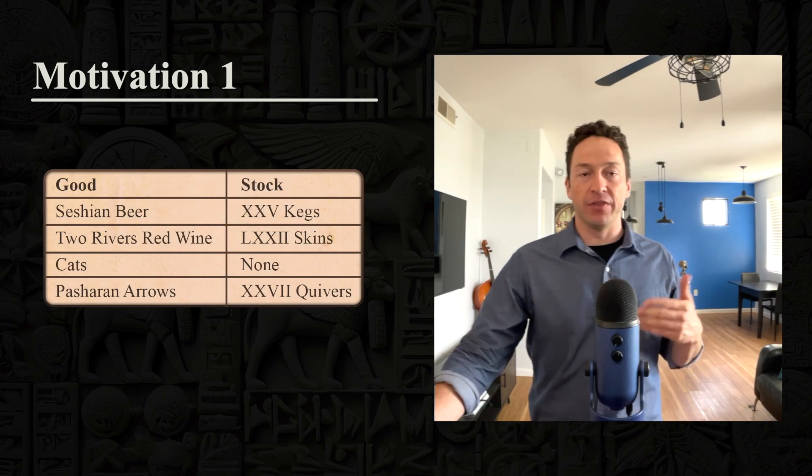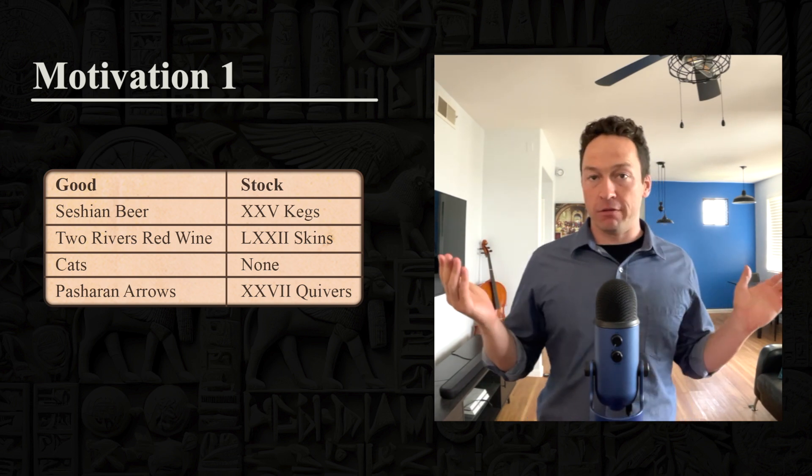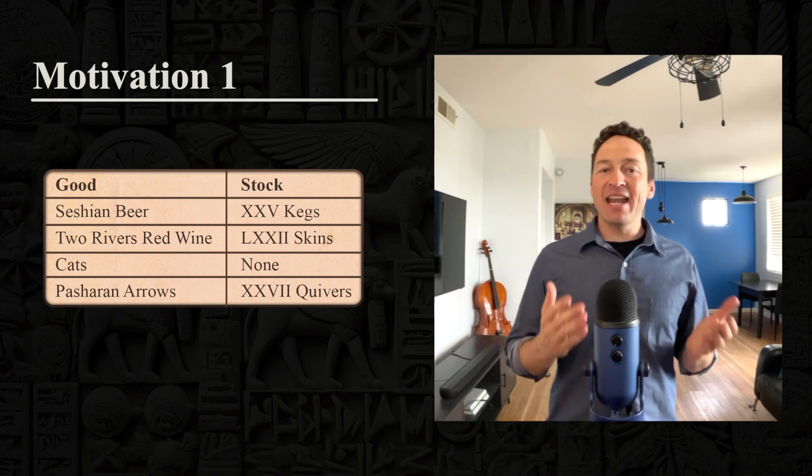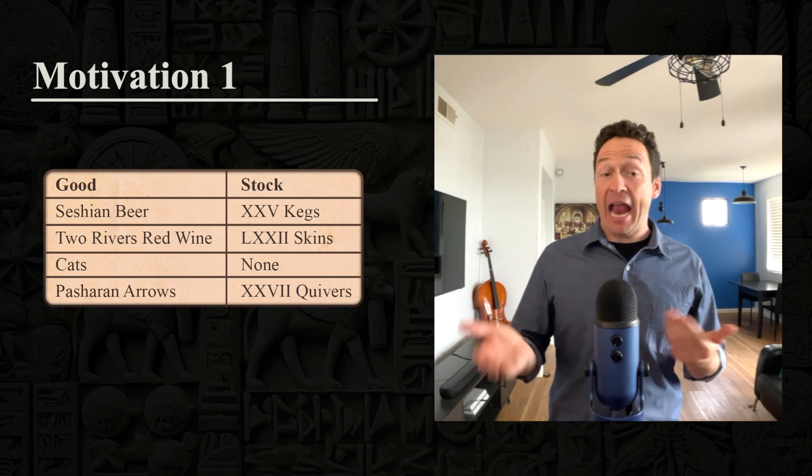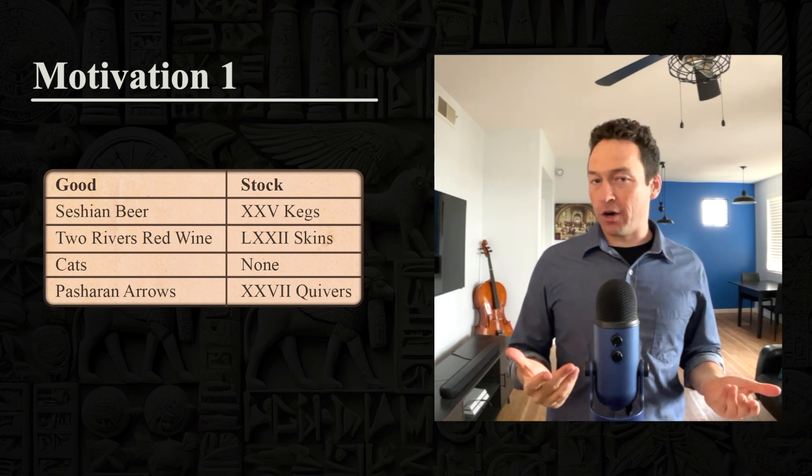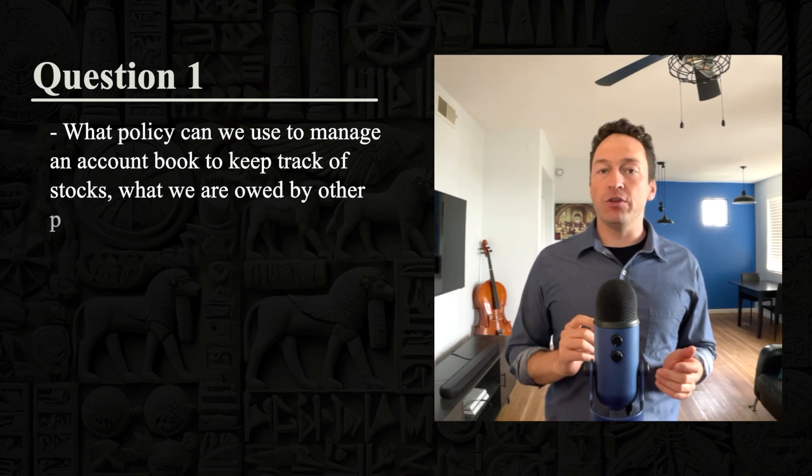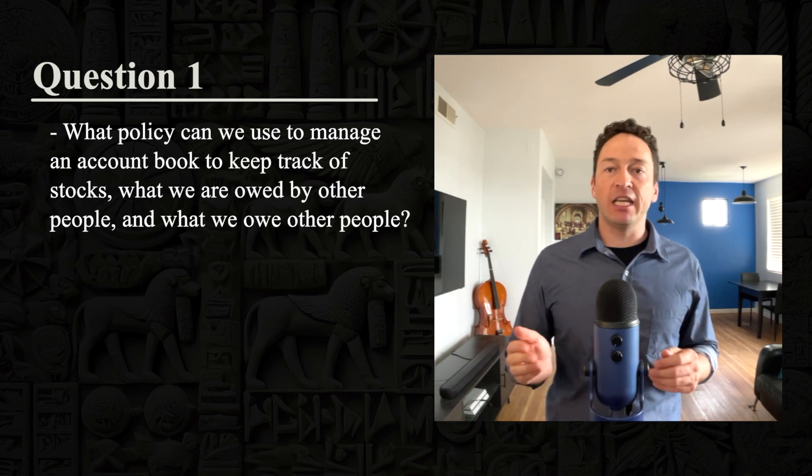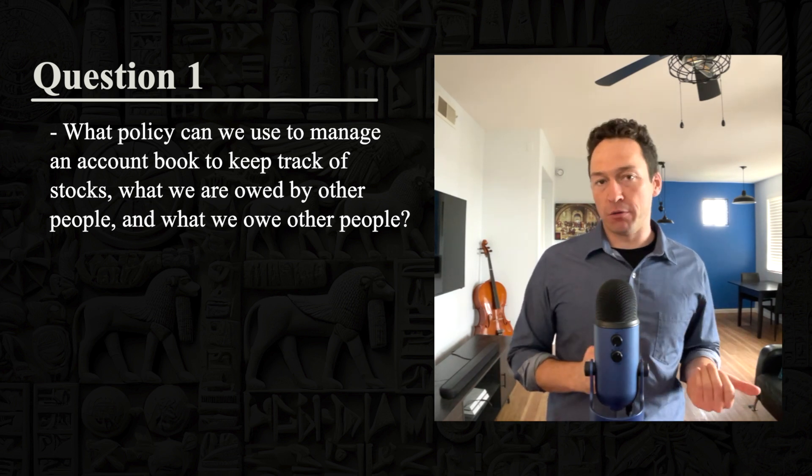As a result of this, he's found that he needs to change his account book. He already had an account book that looked like this. So you can see on the left, we have different goods that Ark is keeping track of, and on the right, he has a list of how many of each good. But now he wants to keep track of debts that he owes to others and is owed. Question one: what policy can we use to manage an account book to keep track of stocks, what we are owed by other people and what we owe other people?